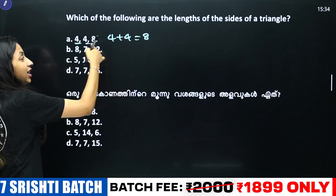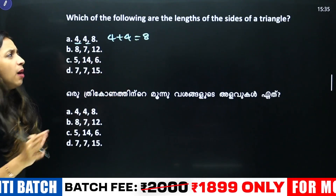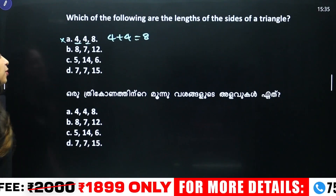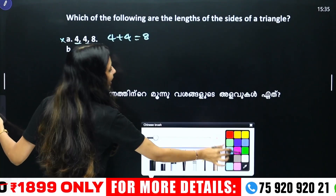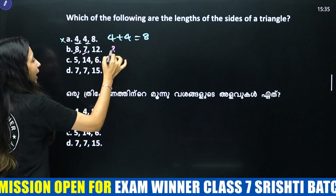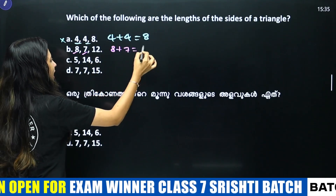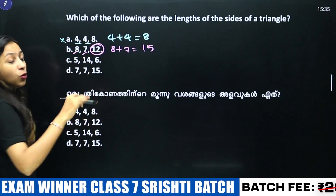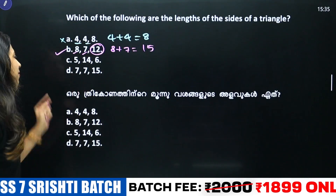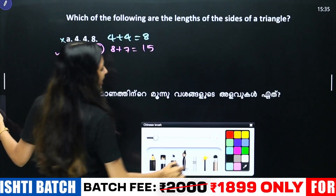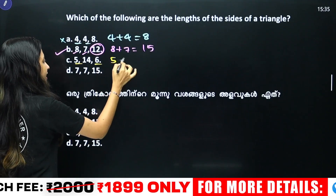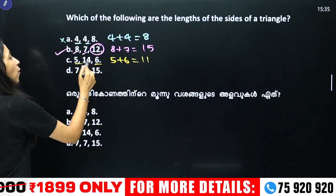For 5, 4, 6: 5 plus 4 is 9, which is greater than 6 — yes, this works. We check all combinations. For 5, 14, 6: 5 plus 6 is 11, which is less than 14, so this does not form a valid triangle.